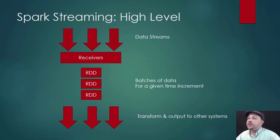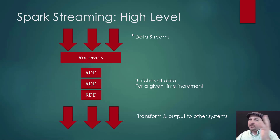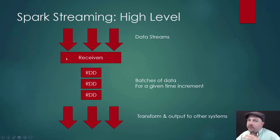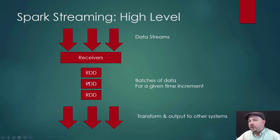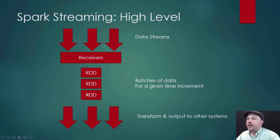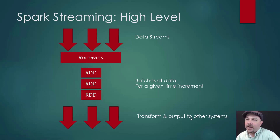At a high level, this is how it looks. We have data streams coming in from some source — it could be sensors, it could be web logs, or something else feeding us data. We have a receiver on Spark streaming that listens for that data and ingests it. It breaks that data stream up into a bunch of small RDDs that maybe contain one second's worth of data, or whatever we configure it to. These just keep getting generated over and over again, and we just keep transforming and processing them.